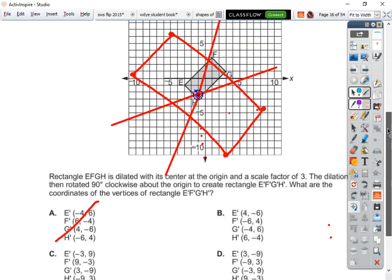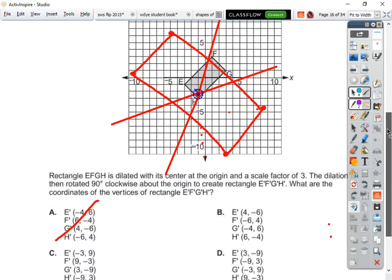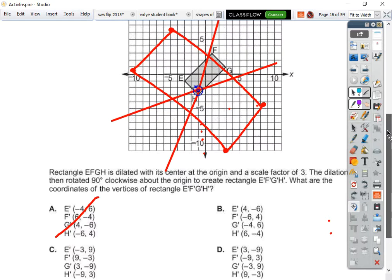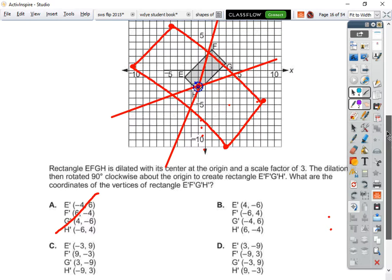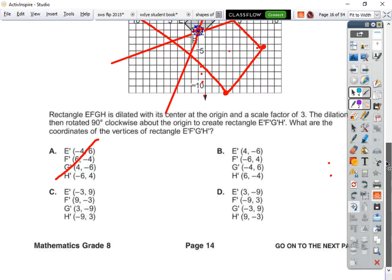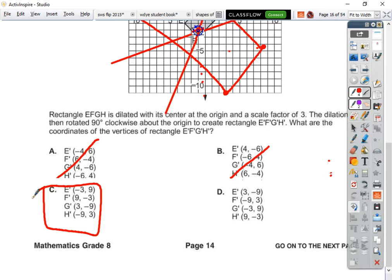Alright, so the answer ends up being C because I did not rotate it well enough. And the reason why I know it's C is because when I did my dilation I ended up with 3's and 9's, so that can tell you that those two are off. I know it's C because I don't end up with 3 comma negative 9. So I know it's C.